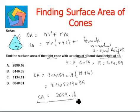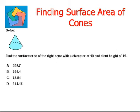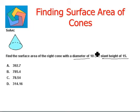Multiplying all three numbers gives us 2089.16. This is the surface area of the right cone, which corresponds to option A. Now let's look at the next question: find the surface area of the right cone with a diameter of 10 and a slant height of 15.